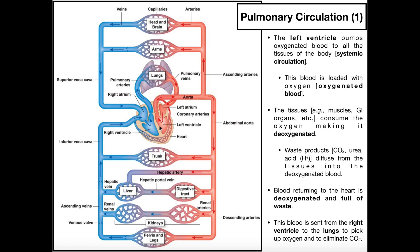Here's our heart. The left side is over here — we're looking at the anterior view, this is the patient's left. The left ventricle, which is the larger side of the heart, pumps oxygenated blood to all the tissues of the body. It pumps that blood through the aortic semilunar valve into the aorta.